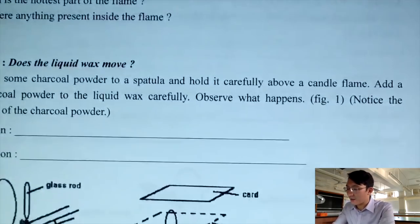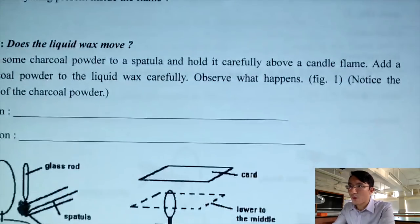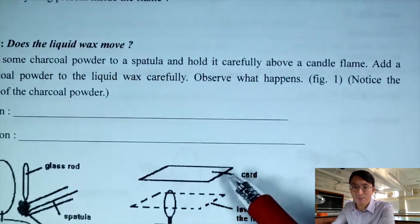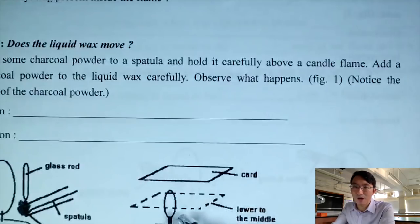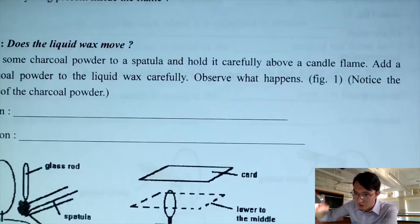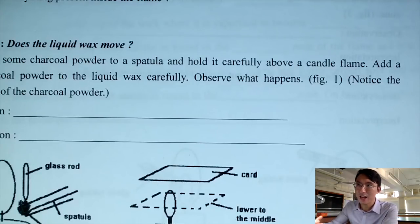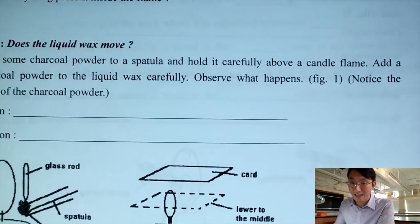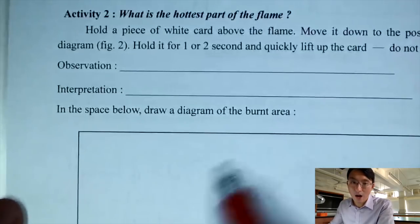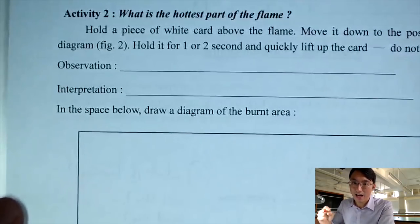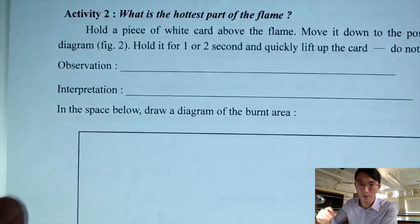In the second activity, based on this diagram, what we are trying to do is lower a cardboard down to the tip of the flame for less than half a second, then lift it out. We want to see the pattern of the burnt area of the cardboard — we draw out the burnt pattern obtained after lowering the cardboard to the flame.